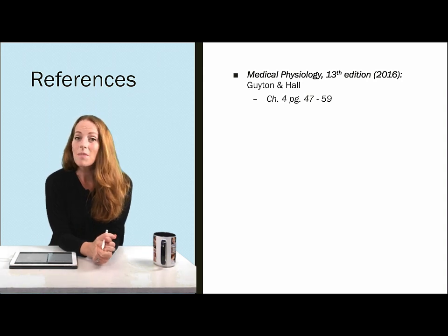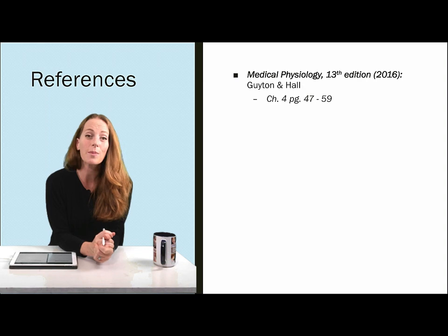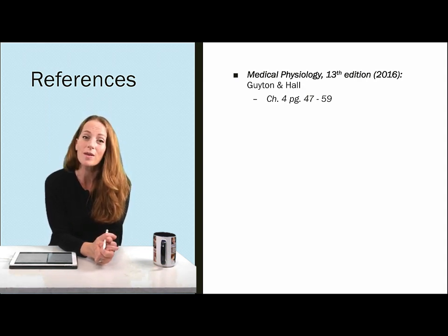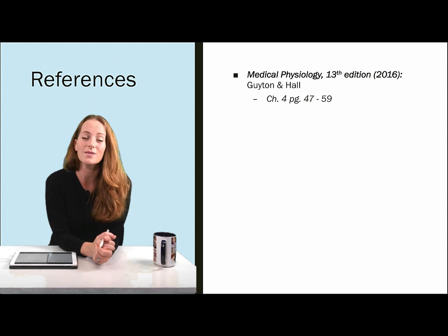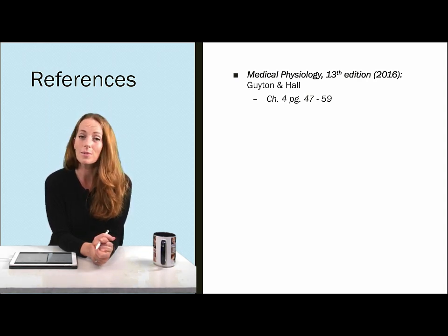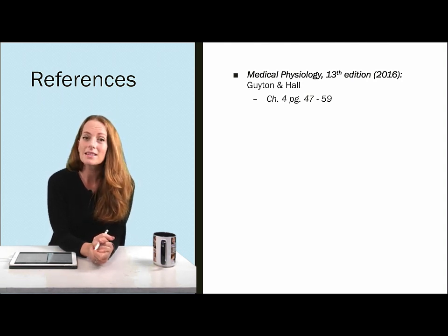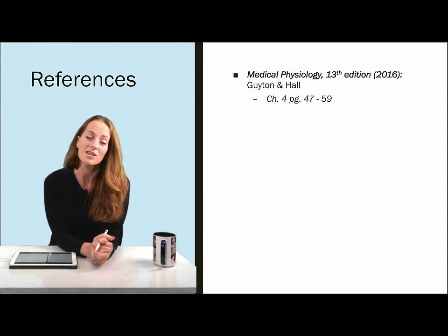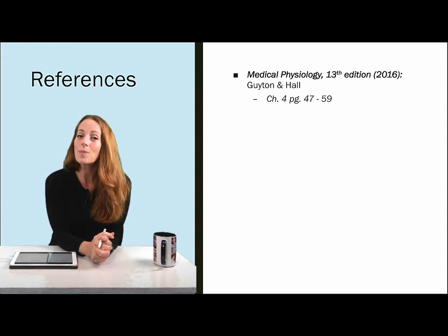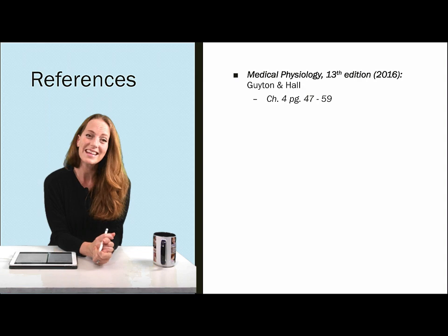That concludes the membrane transport lecture. We talked about passive transport processes and the gradients that drive molecules across the membrane without the need for energy. We compared channels and carriers, which help molecules that can't cross the phospholipid bilayer get through via proteins. Finally, we compared passive and active transporters — active transport moves substances against their concentration gradients, either directly using ATP or indirectly using energy stored in gradients. Please let me know if you have any questions.